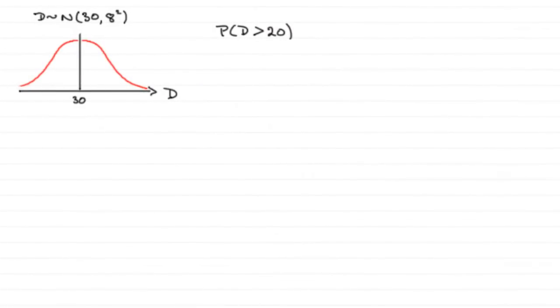Now in the first part of this question, we're given that D is distributed normally with a mean of 30 and a standard deviation of 8. And so what they've got here is the variance, 8 squared, or 64.